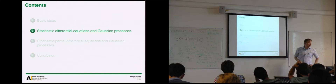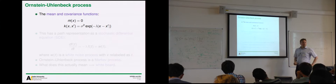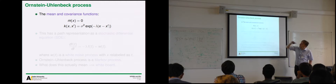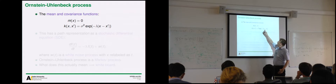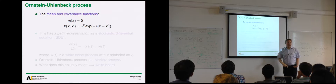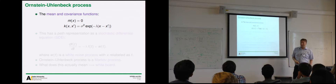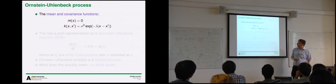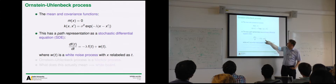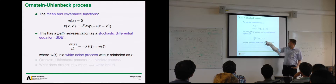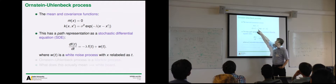Let's look at a practical example. You might have seen the Ornstein-Uhlenbeck covariance function — sometimes called the exponential covariance function. It has zero mean, and the covariance between two points is the exponential of minus lambda times the distance between the points, where lambda is some positive constant. I'm assuming x is one-dimensional to get the connection to the Ornstein-Uhlenbeck process. It turns out this is equivalent to the stochastic differential equation where the white noise process has spectral density Q, with the connection Q = 2λσ².